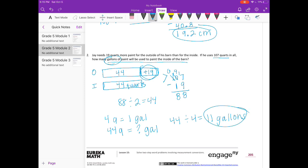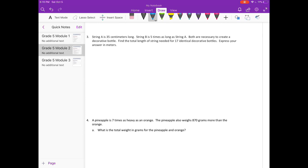Number three. String A is 35 centimeters long. String B is five times as long as string A. Both are necessary to create a decorative bottle. Find the total length of string needed for 17 identical decorative bottles. Express your answer in meters. So string A is 35 centimeters, B is five times as long as A, so B is 35 times 5 centimeters, which would be 175 centimeters. Both are necessary to create a decorative bottle, so I'm going to add them together because we need both of them.